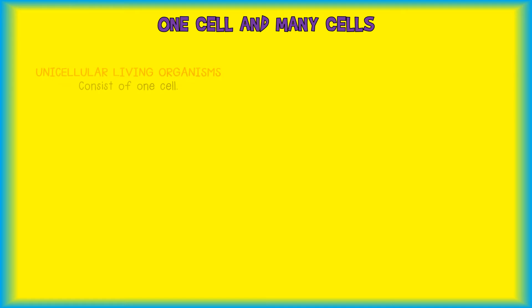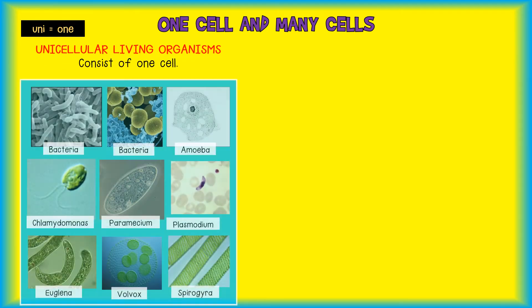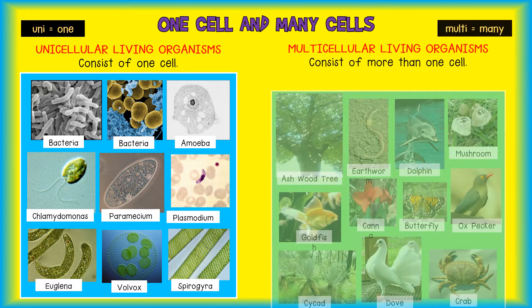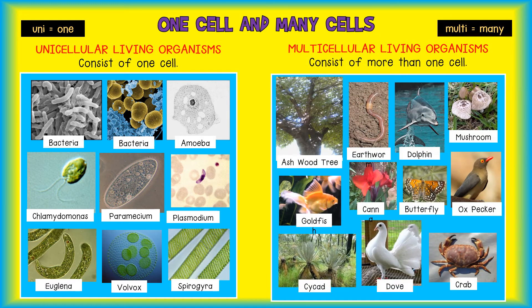Some living organisms only consist of one cell. We say that one-celled living organisms are unicellular — uni means one. Other living organisms are made of many cells. We say that these are multicellular organisms — multi means many.